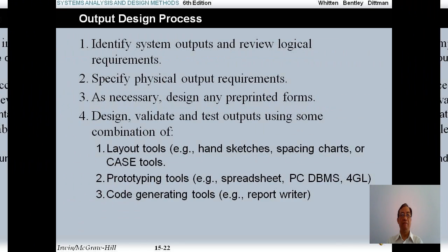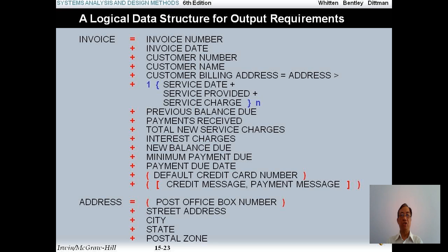The output design process includes: identify system output and review logical requirements; specify physical output requirements; as necessary, design any pre-printed forms; and design, validate, and test output using some combination of layout tools, prototype tools, and code generation tools. Also define a logical data structure for output requirements. For example, you have an invoice with an address, an invoice number, invoice date, customer number, post-office box number, and so forth.